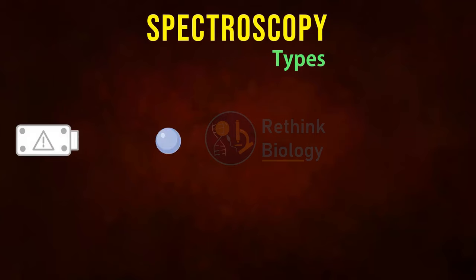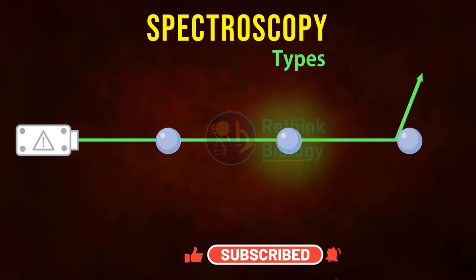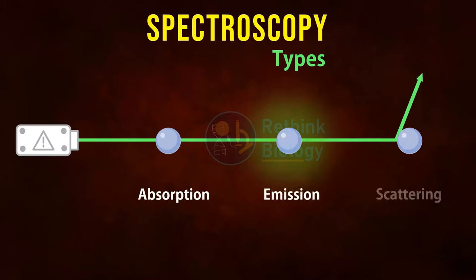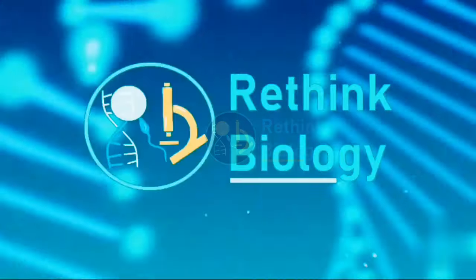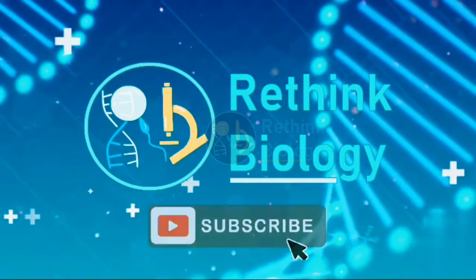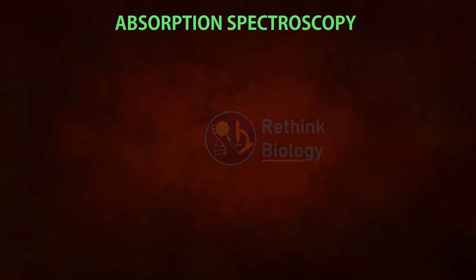When electromagnetic radiation meets matter, the matter may absorb, emit, or scatter the radiation. Depending on which interaction occurs, there are three types of spectroscopy: absorption, emission, and scattering. Today we will talk about only absorption spectroscopy.